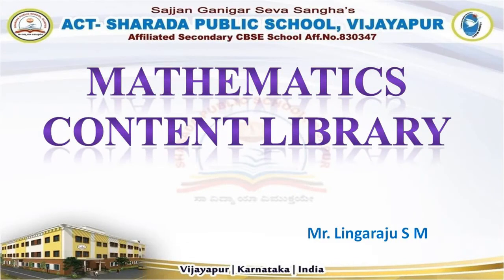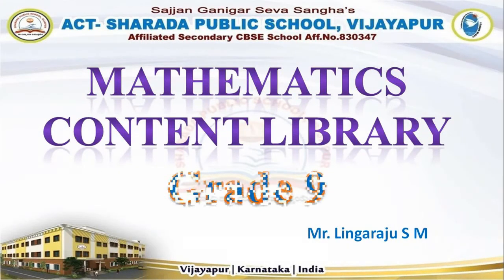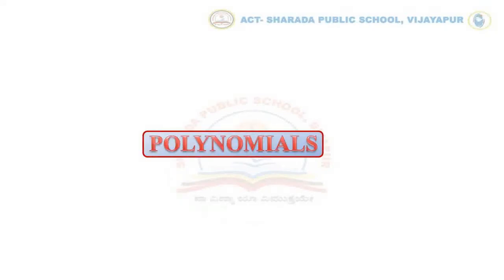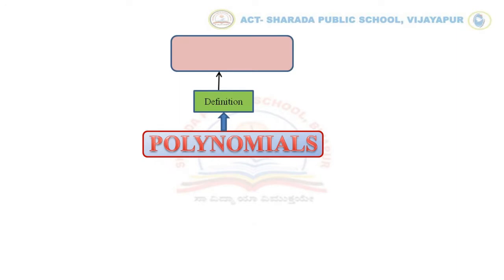Hello children, welcome to Mathematics Content Library for grade 9. Today we are going to revise the chapter Polynomials through its mind map. An algebraic expression containing the constants and variables connected by fundamental operations is called a polynomial. For example, x squared plus 2x plus 3, x cubed minus 5x plus 4x minus 17 — all these are different examples of polynomials.